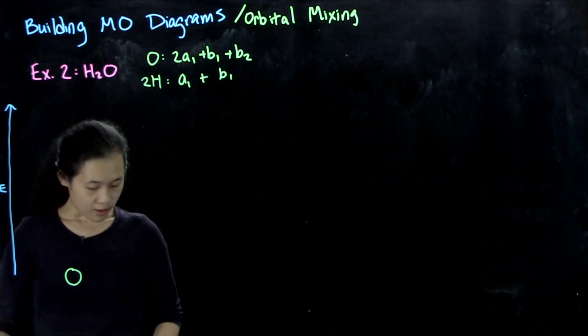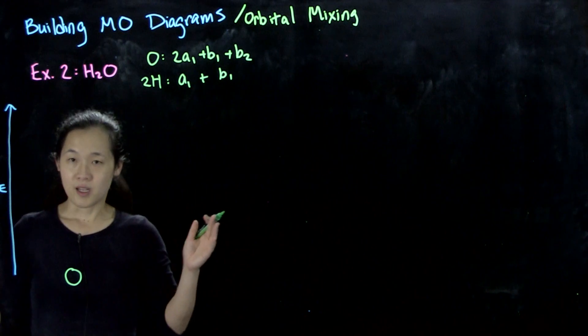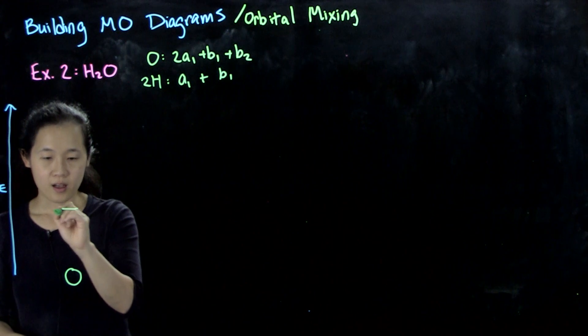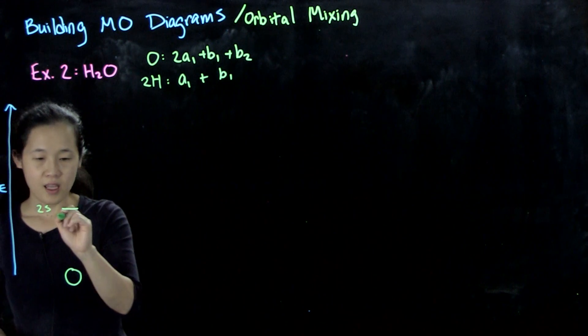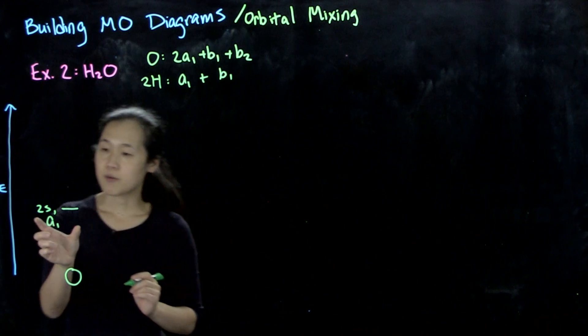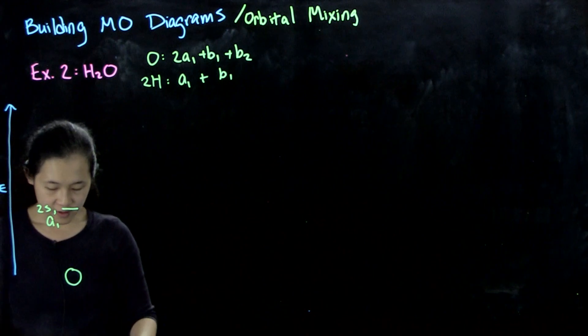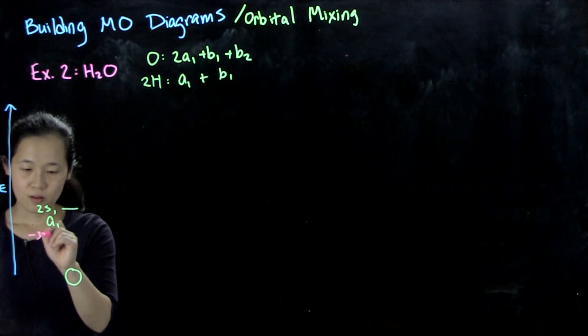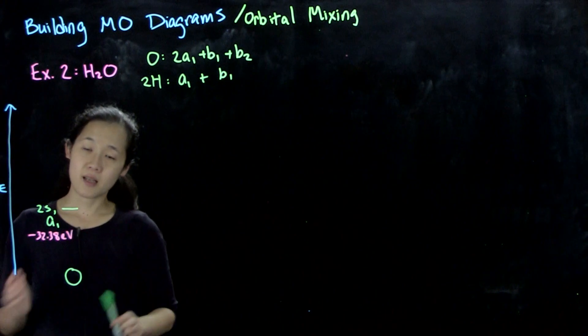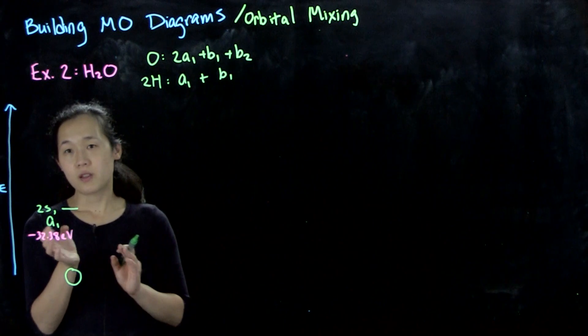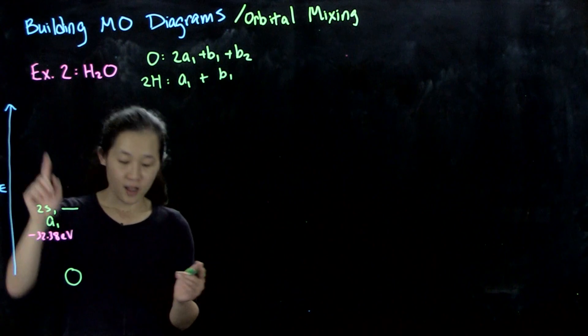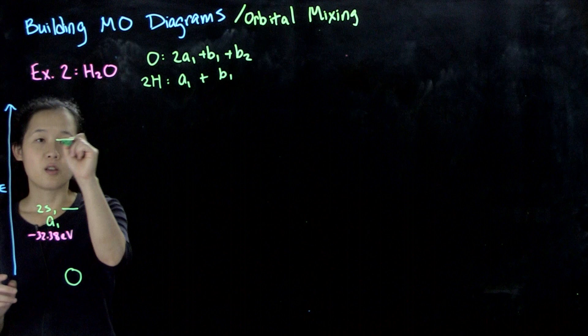The lower energy orbital is the 2s orbital, lower energy than 2p from Gen Chem. Here we have our 2s with a1 symmetry. This has a potential energy, the table listed it as negative 32.38 eV. You should be able to qualitatively know which orbital should be more stabilized. This 2s orbital is lower energy than our degenerate 2p orbitals.